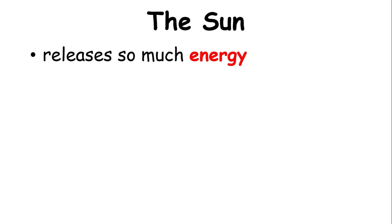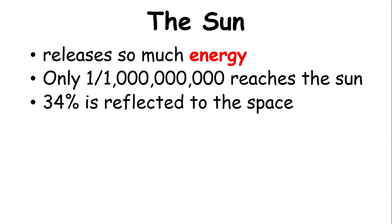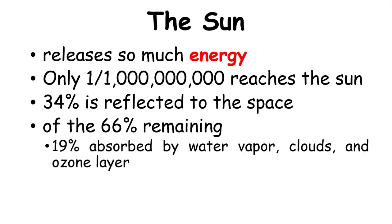The Sun also releases so much energy. However, only one billionth of this energy reaches the Earth. 34% of the energies that reach Earth are reflected to space by the atmosphere. Of the 66% remaining, 19% is absorbed by water vapor, clouds, and the ozone layer. And only 47% on average is absorbed by the Earth's surface, and less than 1% is used by plants for photosynthesis.